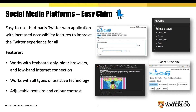Some social media platforms have third-party web applications that increase their accessibility features. EasyChirp is a great example of an accessible Twitter third-party web application that provides a more consistent layout, full access keyboard navigation, better support for assistive technologies like screen readers, and much more.